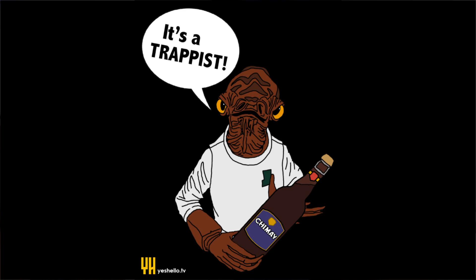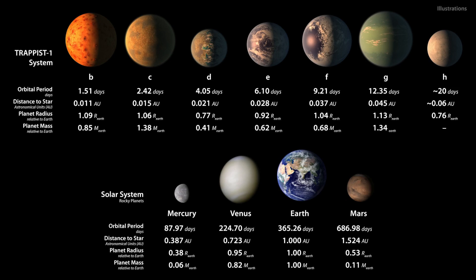You may have heard of the recently discovered exoplanetary system TRAPPIST-1. TRAPPIST-1 is a system with seven Earth-sized planets, three of which could potentially host liquid water. And at 40 light years away, it's relatively close.